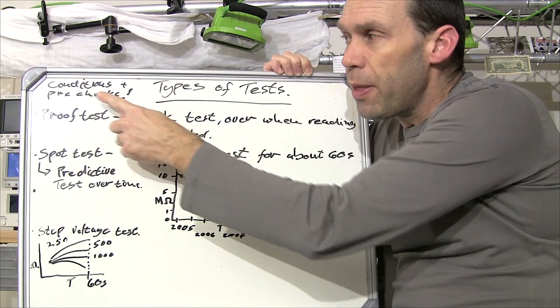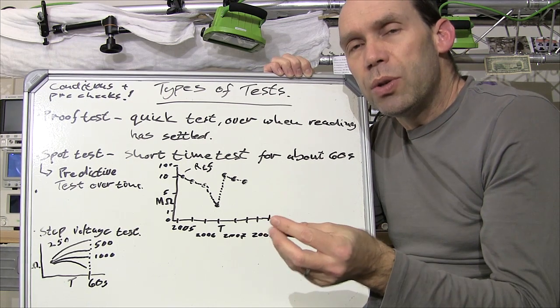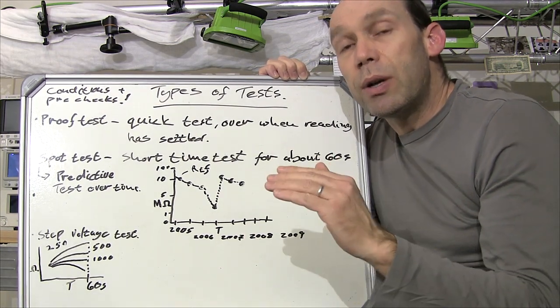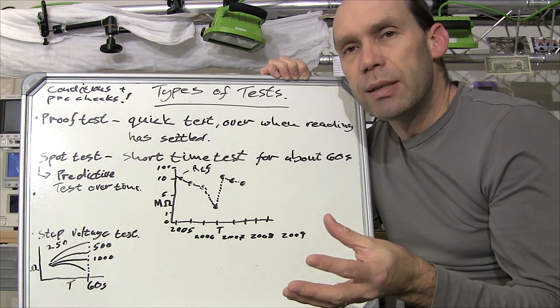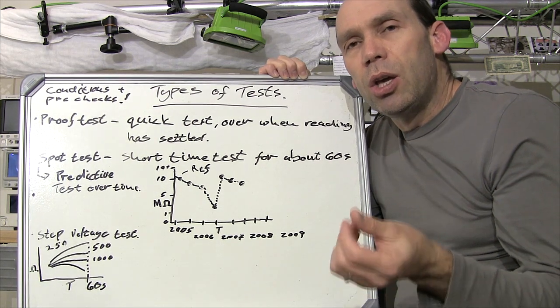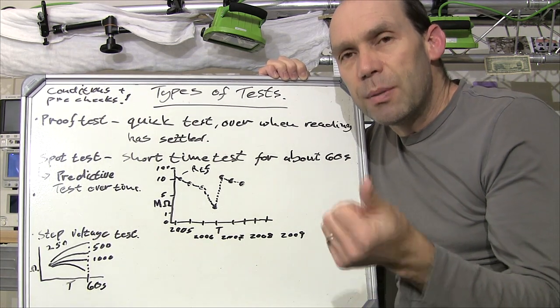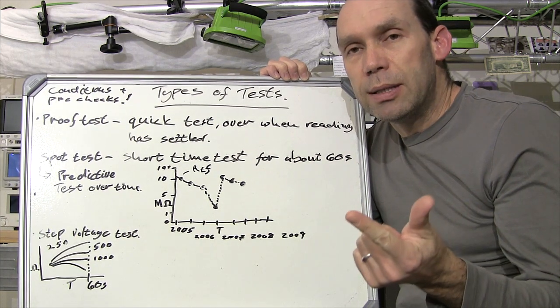So the one thing I've noted here, I've said about conditions and pre-check. Before you're doing these tests, especially if you want to build historic data on the electrical installation or equipment that you're testing, which might be in a factory or production line, you want to ensure that you're testing under similar conditions and that includes both temperature and humidity.